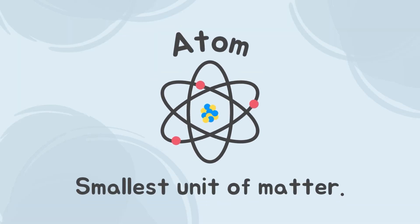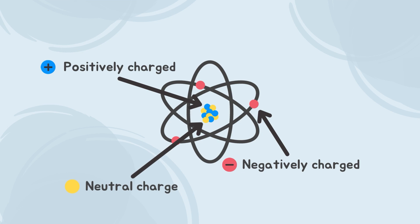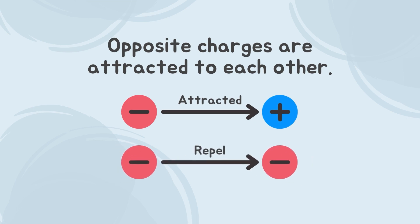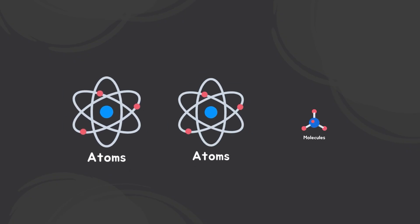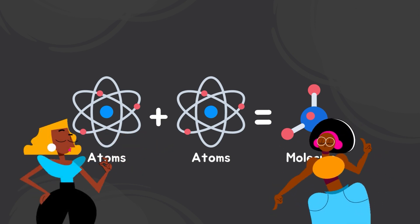Another thing we need to know before we get into chemical reactions is atoms. Atoms are the smallest unit of matter. Inside an atom, there are three types of particles called electrons, protons, and neutrons. Electrons are negatively charged while protons are positively charged. Neutrons have neutral charge. Opposite charges are attracted to each other; therefore, electrons are attracted to protons. Electrons repel one another. When two atoms combine together, they form a molecule. Even our human body is made out of molecules.